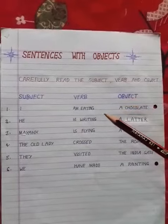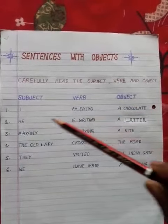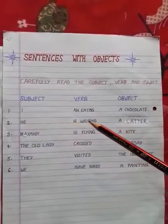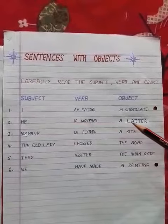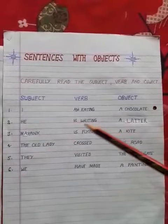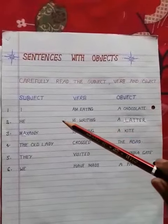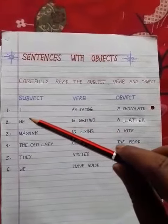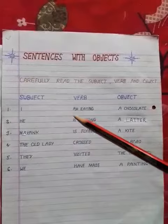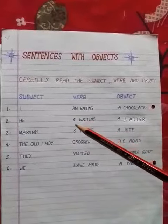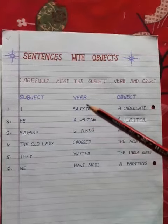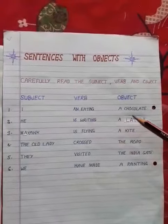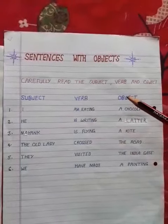2nd example: He is writing a letter. In this sentence — he: subject, is writing: verb, a letter: object.